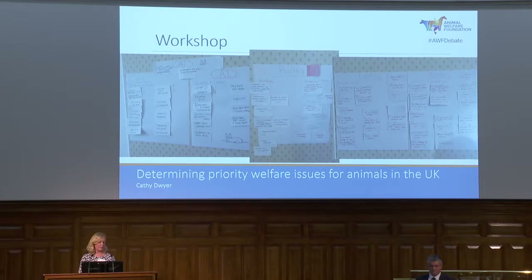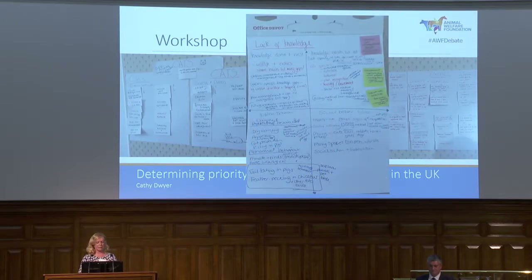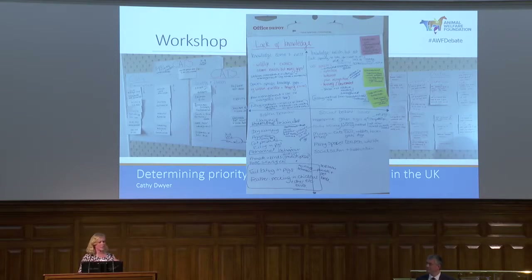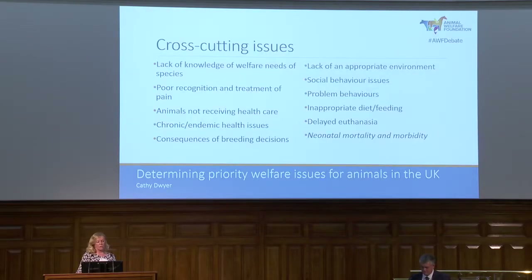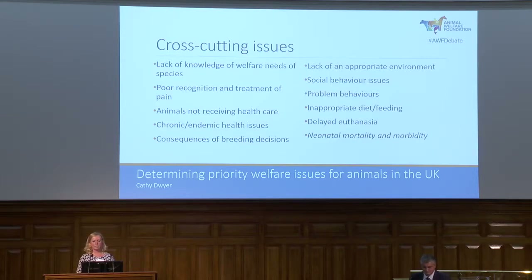I'm not going to go through all the welfare issues we prioritised because there are large numbers of them. I'll show you the cross-cutting issues — those that each of the species groups thought were important and prioritised. These aren't in a ranking order, except that the lack of knowledge of the welfare needs of the species was prioritised by every species group as the most important thing affecting animal welfare.